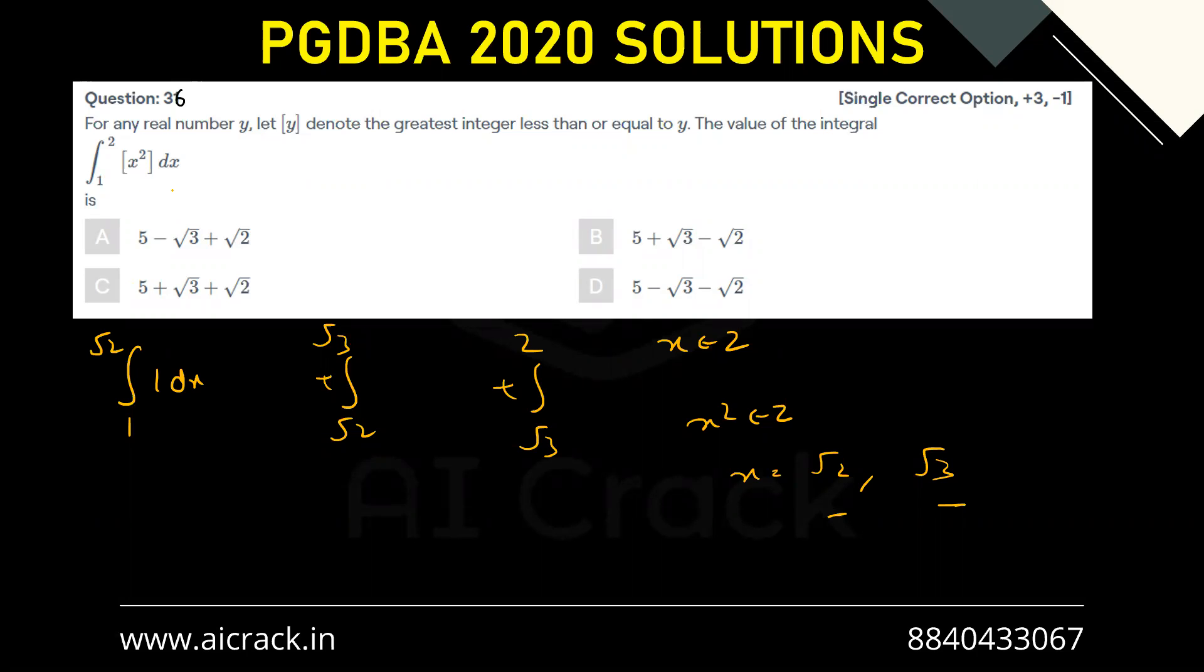Similarly, from √2 to √3, x² is ranging from 2 to 3, so the gif function would equal 2 dx. And similarly from √3 to 2, this would be 3 dx. So now this is a very standard integral.